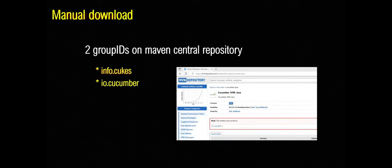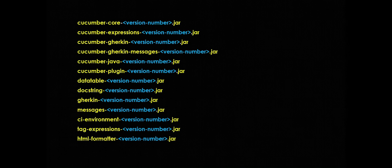Before you start downloading the jars manually, you need to know that the Cucumber jars are available under two different group IDs on the Maven Central repository. The first group ID is info.cuc and the second is io.cucumber. info.cuc is a legacy group ID and all the jars from info.cuc have now been moved into io.cucumber. Hence all the jars that we are going to download will be downloaded from the group ID io.cucumber.